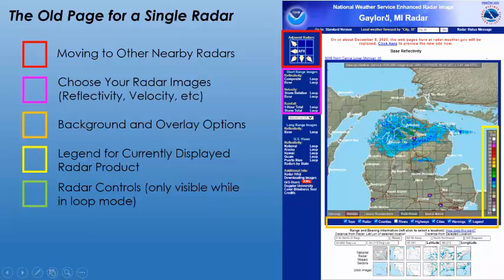Just a quick refresher on the old page: you've got your radar navigation controls to go to different radars, and down below you've got all the different radar options — the different products. At the bottom you've got the different background overlays and things you can put on there, like warnings, cities, highways, and other labels. Over here you've got your legend, or color table, or key for the radar image. And if you were in loop mode, that's where you'd see your radar controls like zoom and play and pause.